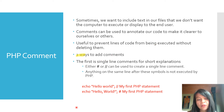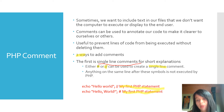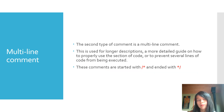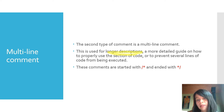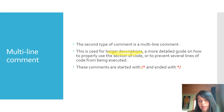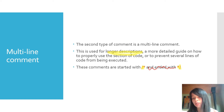There are two ways to add comments. First, single-line comments: you use the pound sign or the double slash. Anything on the line after this symbol is not executed — for example, 'my first PHP statement' won't be executed. The second type is a multi-line comment, used for longer descriptions or to comment out several lines of code at once. It starts with a slash and an asterisk and ends with an asterisk and slash. Anything in between is commented out.